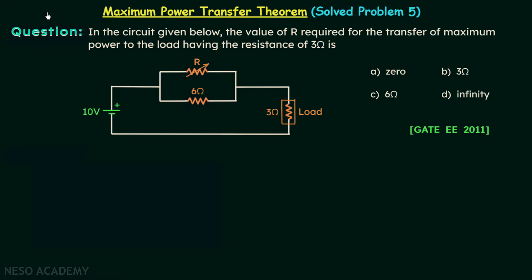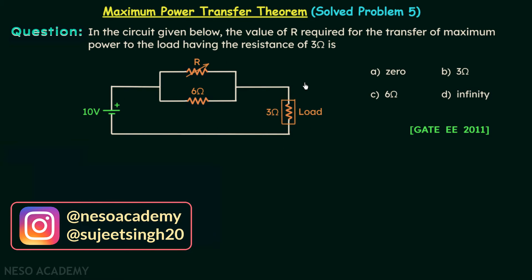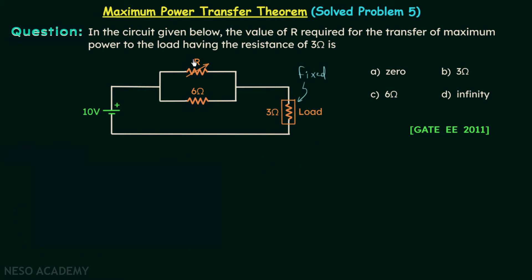We are going to understand case number 2 of maximum power transfer theorem for DC circuits. When you observe the network in the problem, you will find the load is fixed — it is not variable. And you can also notice that one resistance of the network is variable, which was not happening in case number 1, where the load was variable.